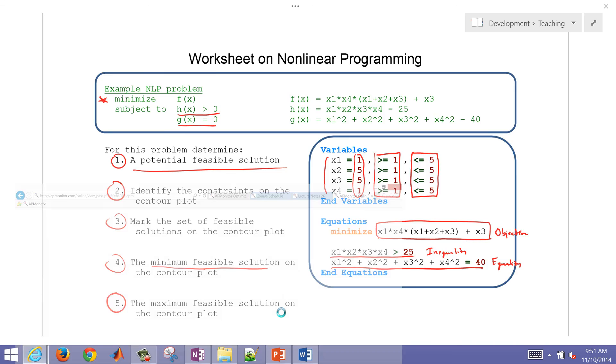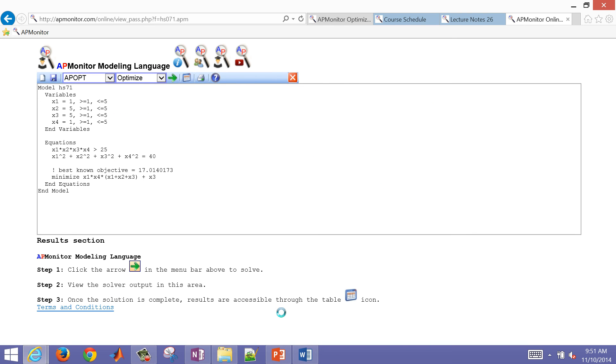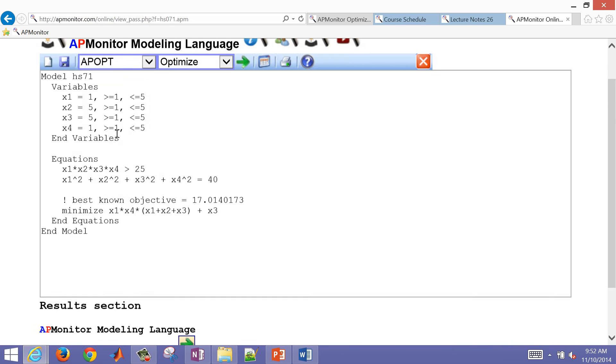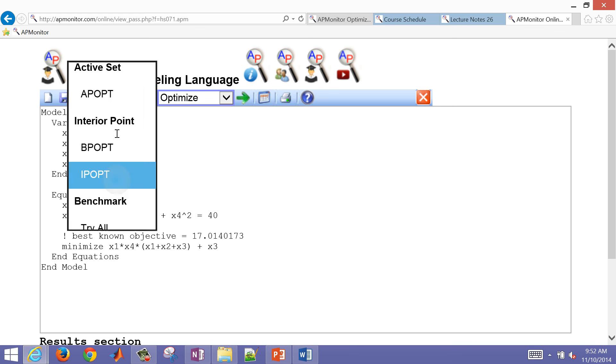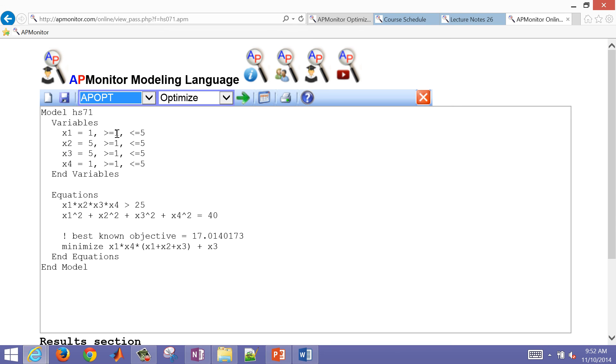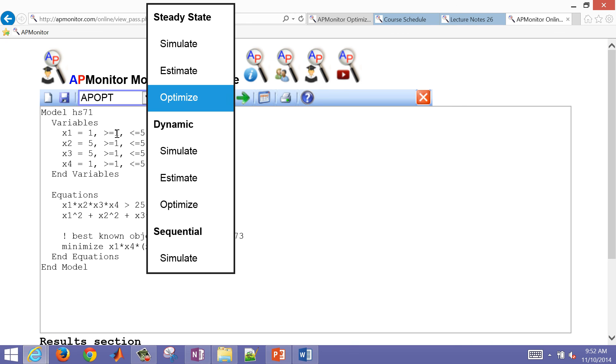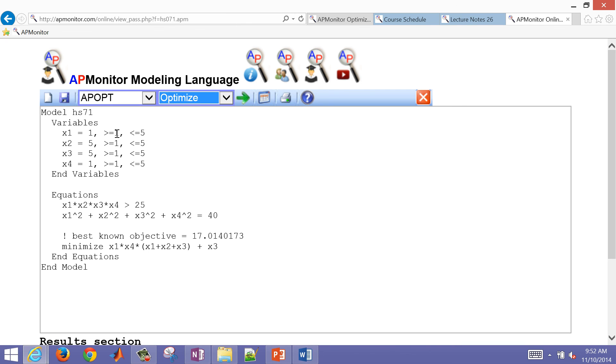I'm going to come over to apmonitor.com, and if you type in this address, you can see this problem. This is the Hock-Schittkowski problem number 71. I'm going to zoom in just a little bit here, and I can select a couple different solvers to choose from. For example, ipopt, apopt. Optimize is what we want to select here. We don't want to select any of the dynamic modes. I'm actually going to select try all. So I'm actually going to try all of the available solvers and see which one works the best.